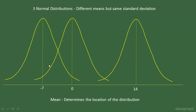Note that all the curves drawn here are equally flat and wide, and this is because we have assumed that the standard deviation of these distributions is the same. By the way, the mean of a distribution can be any numerical value — it could be negative, positive, or 0. So don't have the belief that mean should be a positive number only.